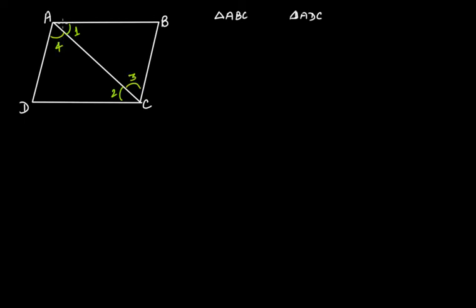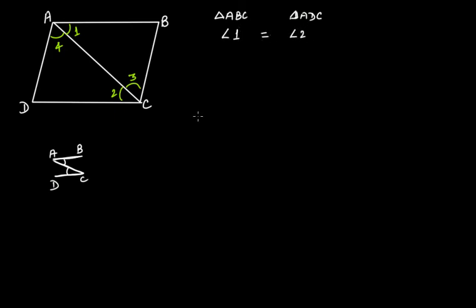Now if we look at this pair of parallel lines, that is AB and CD — with the transversal — therefore alternate interior angles are equal. So angle 1 is equal to angle 2. Angle 1 of triangle ABC is equal to angle 2 of triangle ADC.